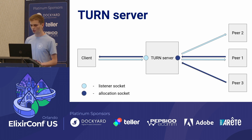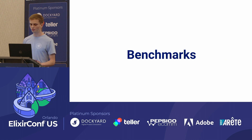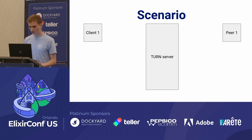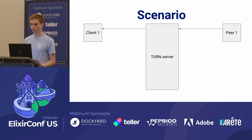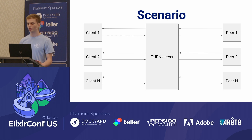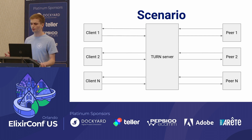We did a couple of benchmarks. We have a pretty simple benchmarking scenario: one connection consists of one client and one peer. The client creates an allocation and the peer starts sending data through this allocation to the client, and the client echoes data back. The questions are how many connections we can handle, how large bitrates we can handle, and what is the impact of datagram payload size on TURN server performance.